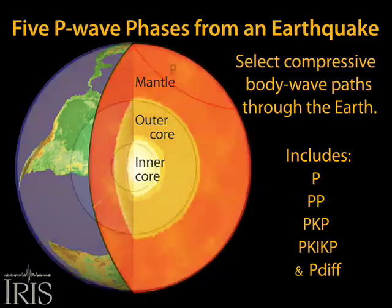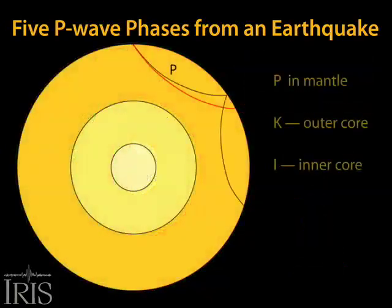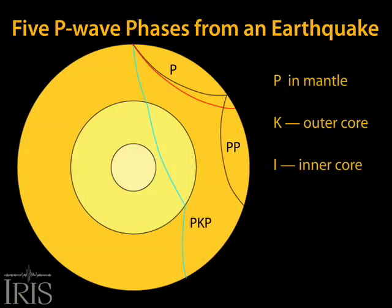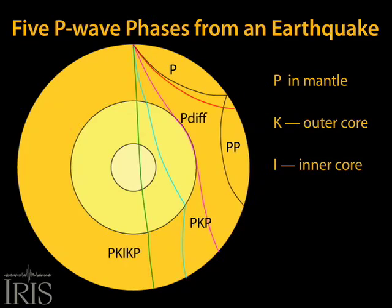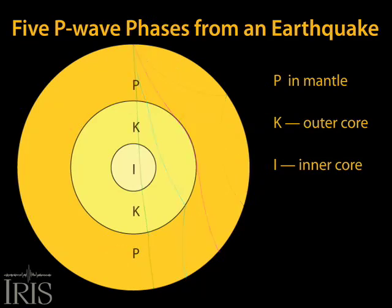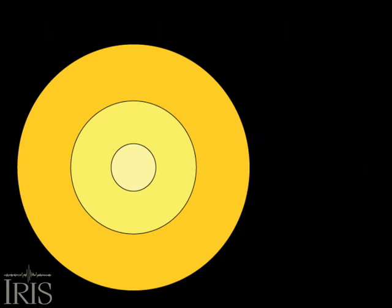This animation addresses five common variations of P-type seismic body waves. All are compressive waves that travel through the mantle in all directions away from the epicenter of an earthquake. The additional letters refer to travel in the mantle and outer and inner core.